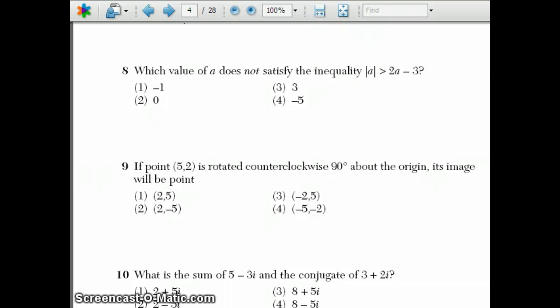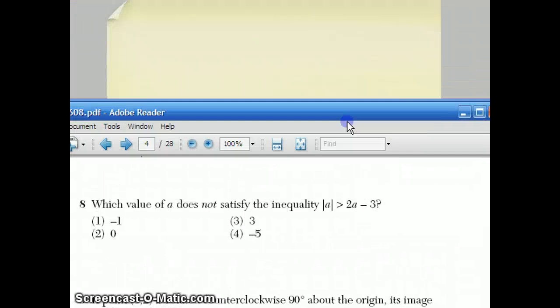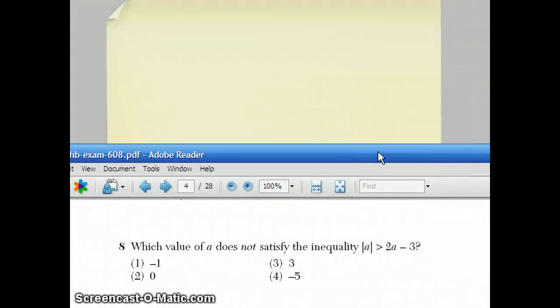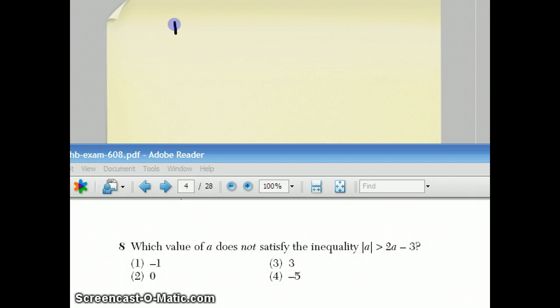Question number 8 says, which value of A does not satisfy the inequality? Now for this question, if it was not a multiple choice question, it would be a lot more complicated. But in this case, since it is a multiple choice question, I think we should take advantage of that just by testing all the numbers. When you put negative 1 in, trying out choice 1, you would get absolute value of negative 1 is 1. And we're checking to see if that's greater than 2 times negative 1 is negative 1 minus 3 is negative 5. So it does satisfy that inequality.